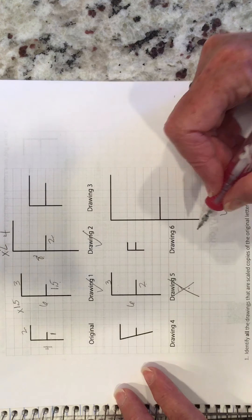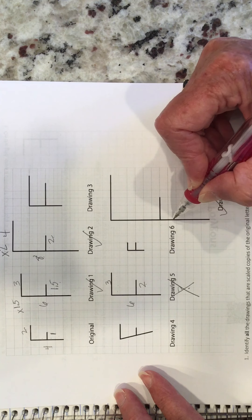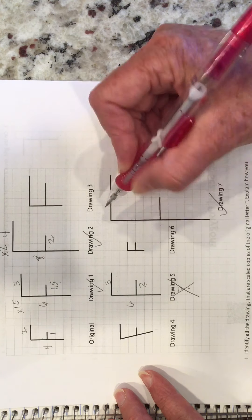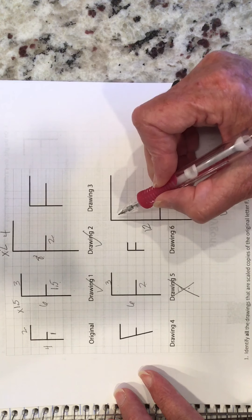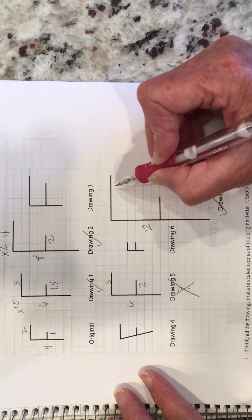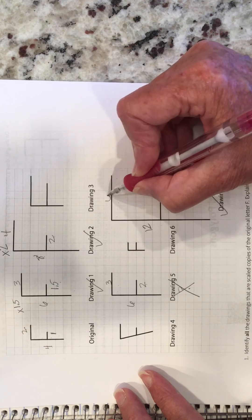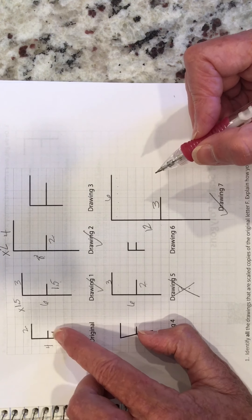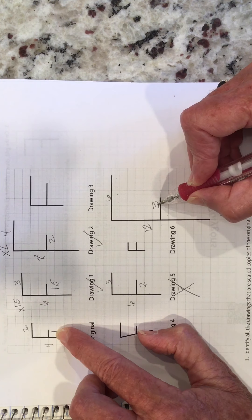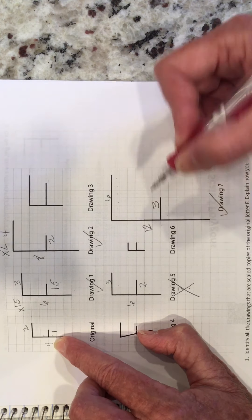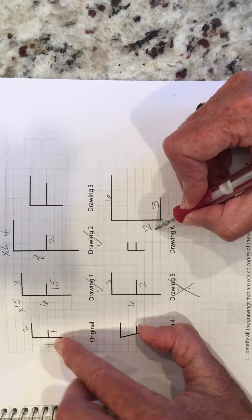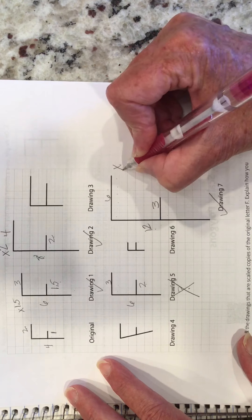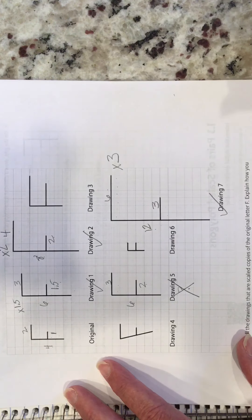Let's look at the next drawing. Counting: this side is 12 units, this side is 6 units, and this side is 3 units. One times three gives us three. Four times three is 12, and two times three is 6. So this one is the original times three — it is a scaled copy at scale factor 3.